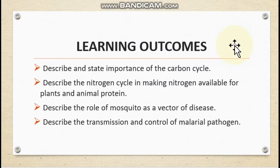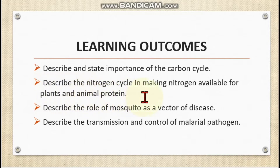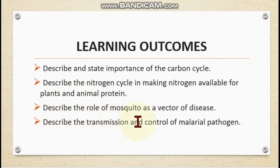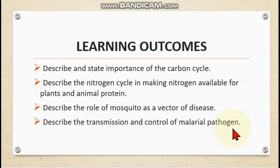By the end of this video, you will be able to describe and state the importance of the carbon cycle. You should also be able to describe the nitrogen cycle in making nitrogen available for plant and animal protein. Additionally, describe the role of mosquito as a vector of disease, and describe the transmission and control of the malarial pathogen.